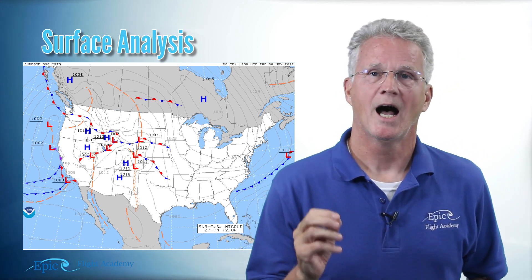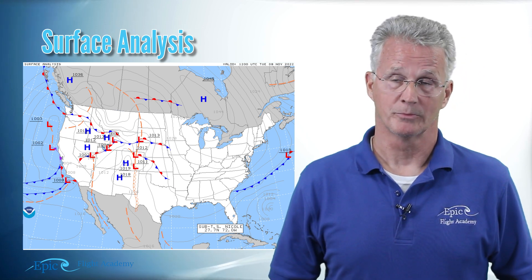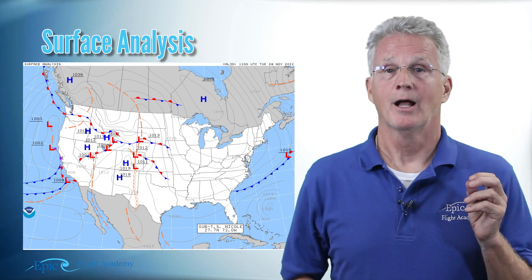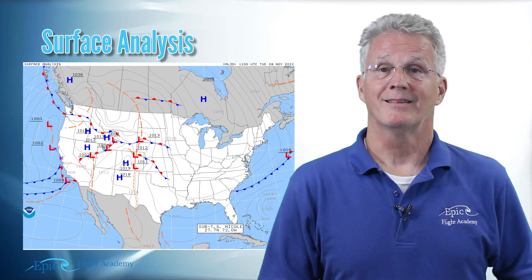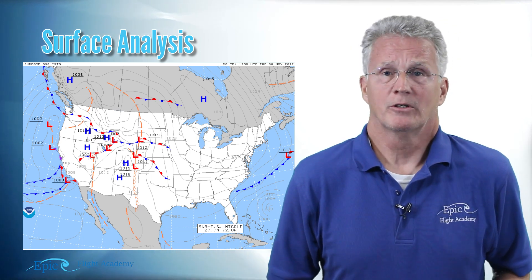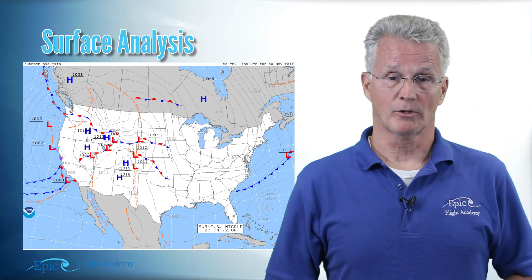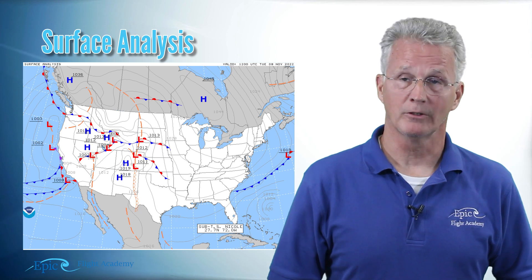For example, on this chart we will find pressure systems. And with those pressure systems, their isobars. We'll also see the spacing of those isobars. This will give us a very good indication of wind direction and speed at the surface.